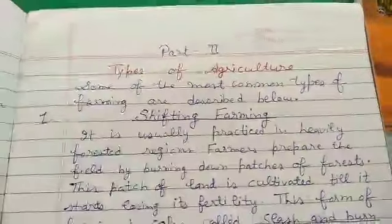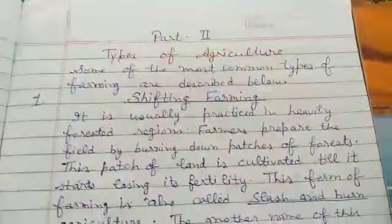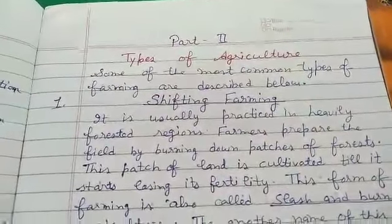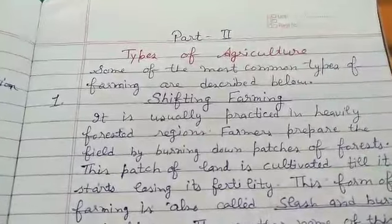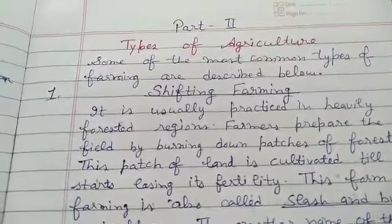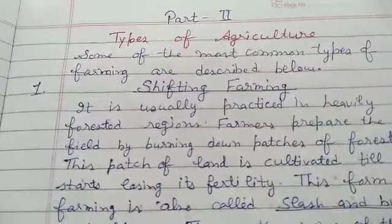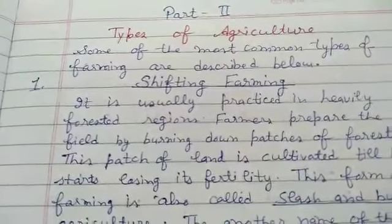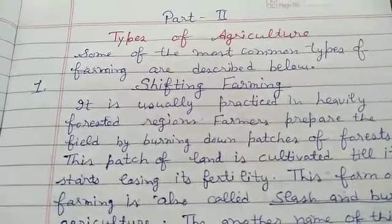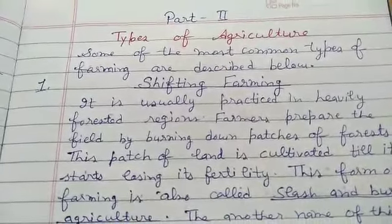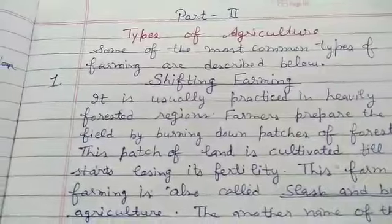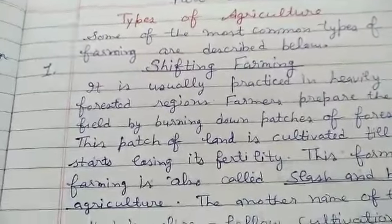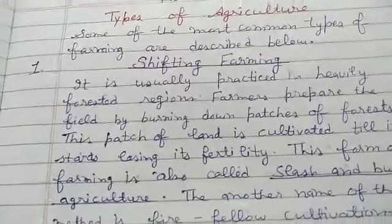This is Part 2 of the chapter — same chapter, Part 2. In this part we will discuss types of agriculture. Some of the most common types of farming are described below. The first type is shifting farming.